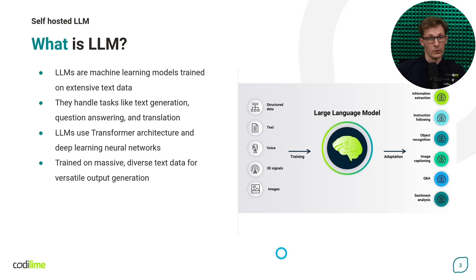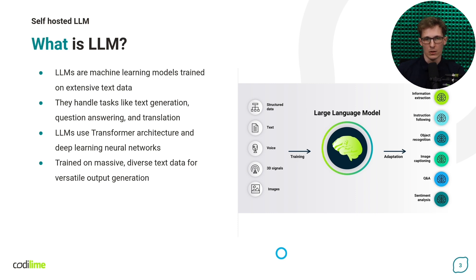So let's start with fundamentals. What is an LLM? LLM is a statistical model of language built from an extremely large corpora of data. The model's job is to predict continuation of some text string. Typically this string is a prompt provided by the user. The model itself is a set of matrices that are used to compute probabilities of subsequent tokens.